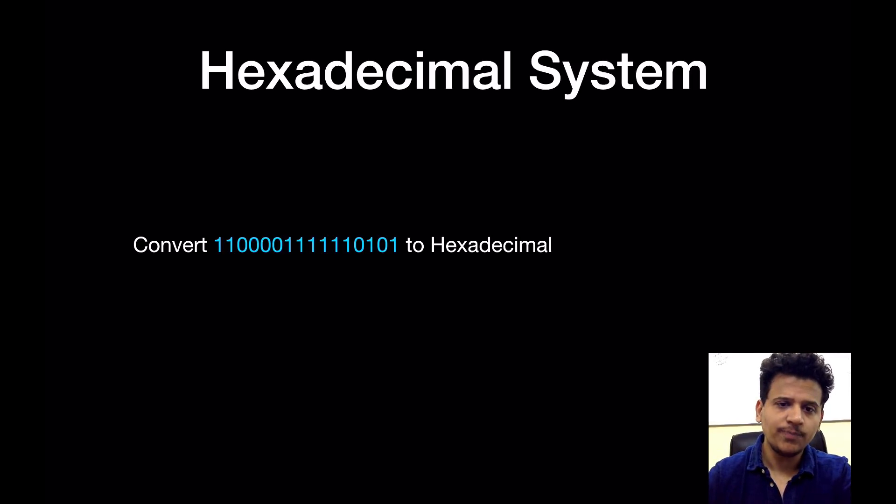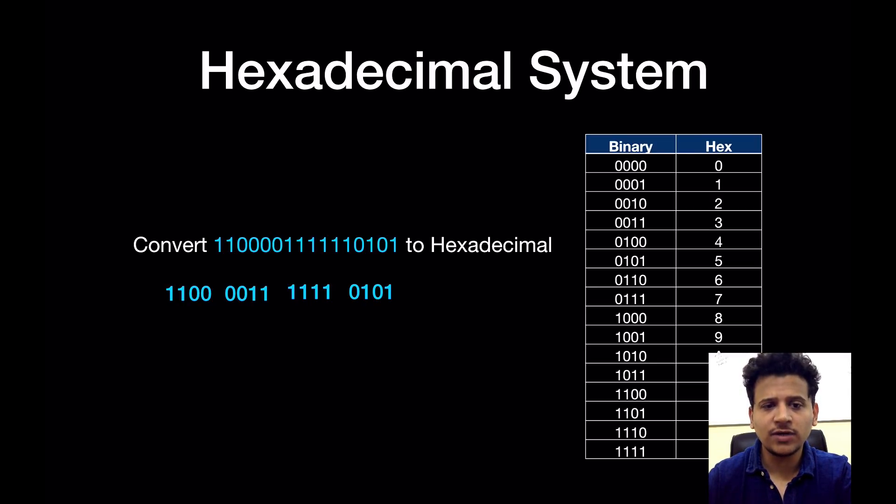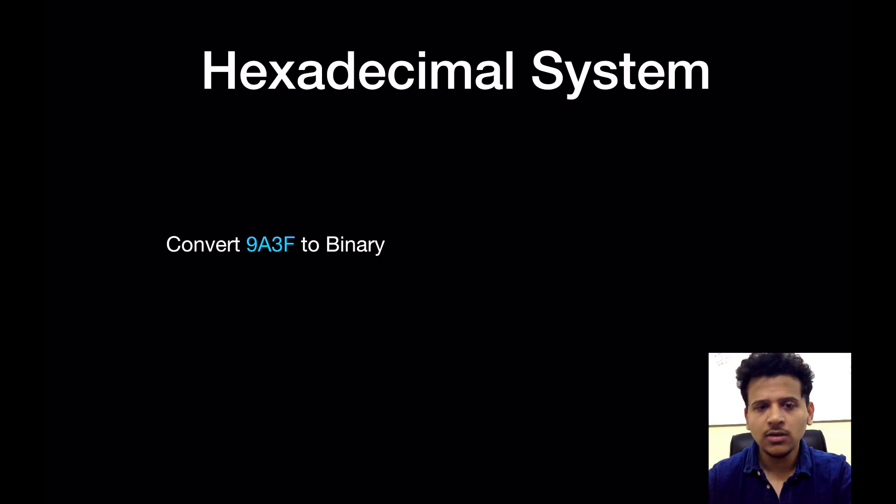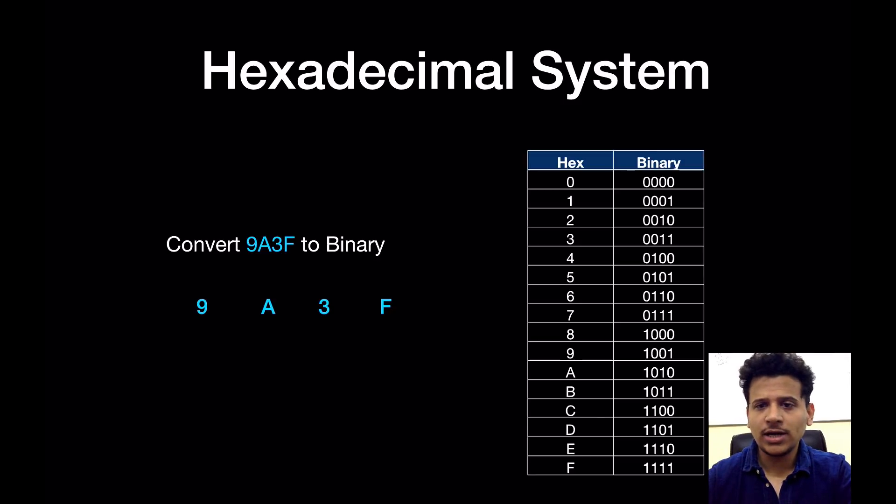Now we'll look at how to convert a binary number to a hexadecimal number. This is a binary number. What we'll do - we'll first group the four bits, then we look at the table and then we convert four binary numbers to its hexadecimal equivalent. So 1001 is 9, 1010 is A, 0011 is 3, 1111 is F.